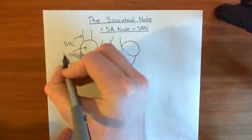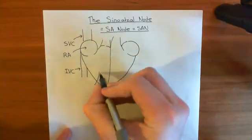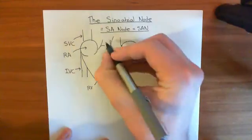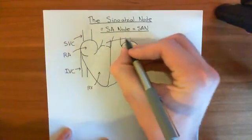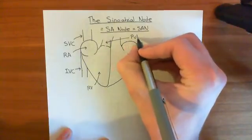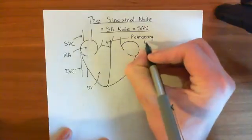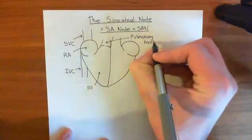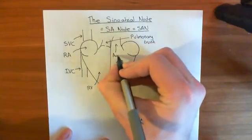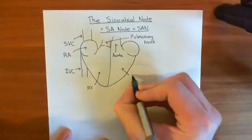This here is the right atrium, which we'll denote as RA. The right ventricle here. The pulmonary trunk here — I'll have to write that out in full. Then this major blood vessel here is the aorta, the biggest artery in the body. This is the left ventricle, the LV.